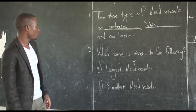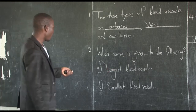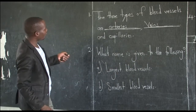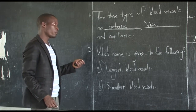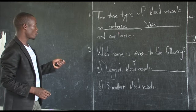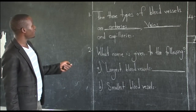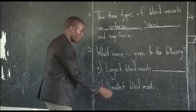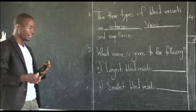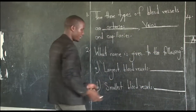For number two, we are asked: what name is given to the following? Part A asks for the largest blood vessel — from arteries, veins, and capillaries, which are the largest? Part B asks for the smallest blood vessel. Remember, veins are medium, so we are left with arteries and capillaries to choose from for largest and smallest.